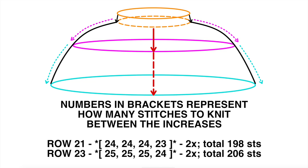Now that I know how many stitches to increase in each row, I figure out the spacing again for rows 21 and 23. In row 25 I start with 206 stitches and need to add 8, so I figure out how many stitches to knit between each of those 8 increases.